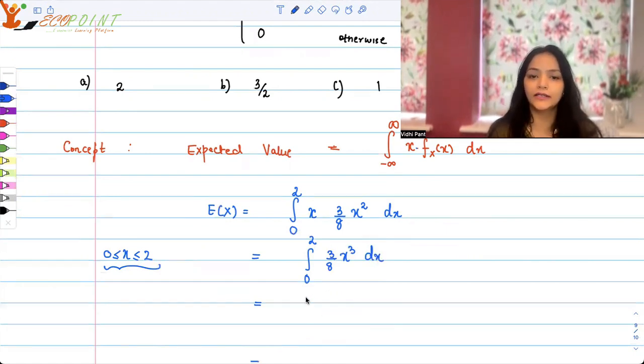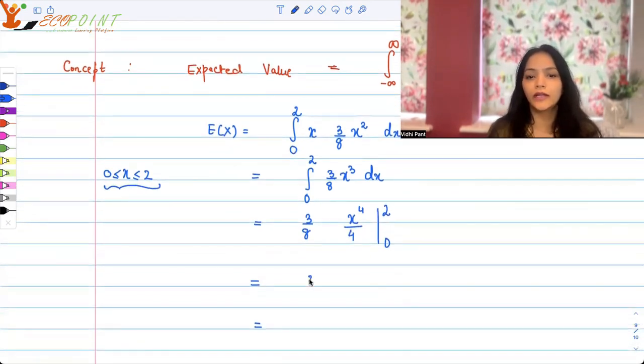That means we are looking at the integral 0 to 2 of 3/8 x³ dx. When you integrate this, I can keep 3/8 outside. Integrating x³ gives you x⁴/4, and you'll have to put the bounds 0 to 2. So that means you get 3/8 times 2⁴/4.